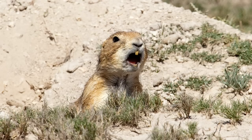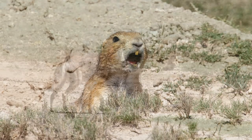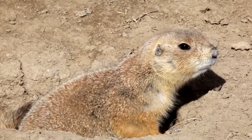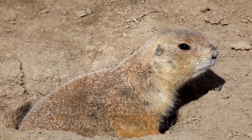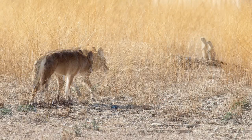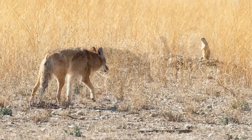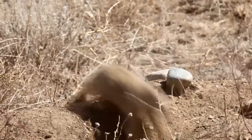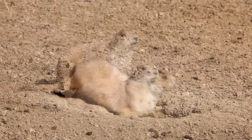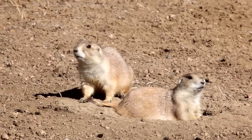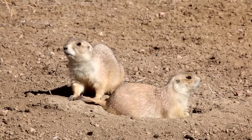Prairie dogs have alarm calls that they give when they see a predator. These alarm calls are a series of relatively high-pitched notes that sound somewhat like a bird chirping. The alarm calls have been a rosetta stone for us in decoding prairie dog language because we can see the predator approach, we can record the alarm calls of the prairie dogs in response to the predator, we can videotape the escape responses of the prairie dogs, and then, when there is no predator present, we can playback the alarm calls that we previously recorded and videotape the escape responses of the prairie dogs to the playback.